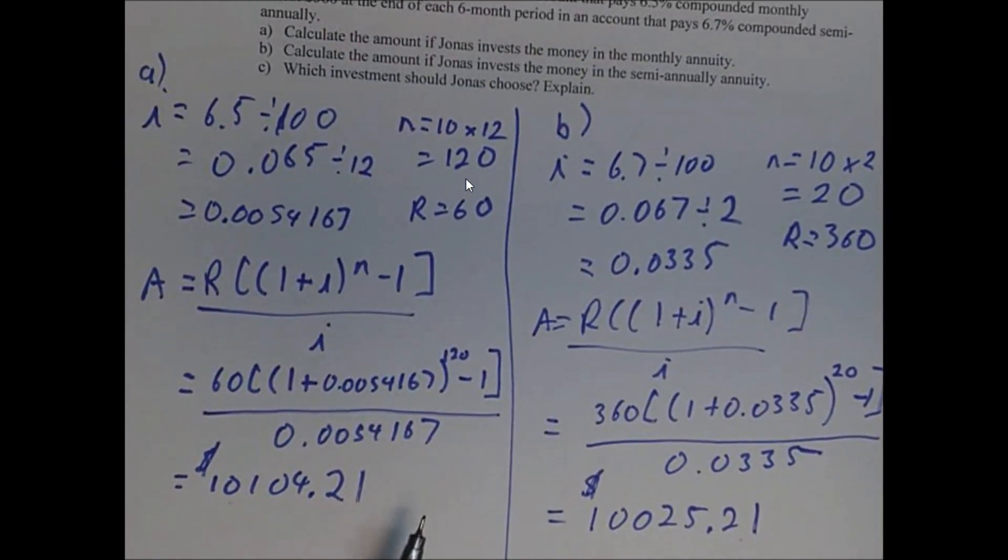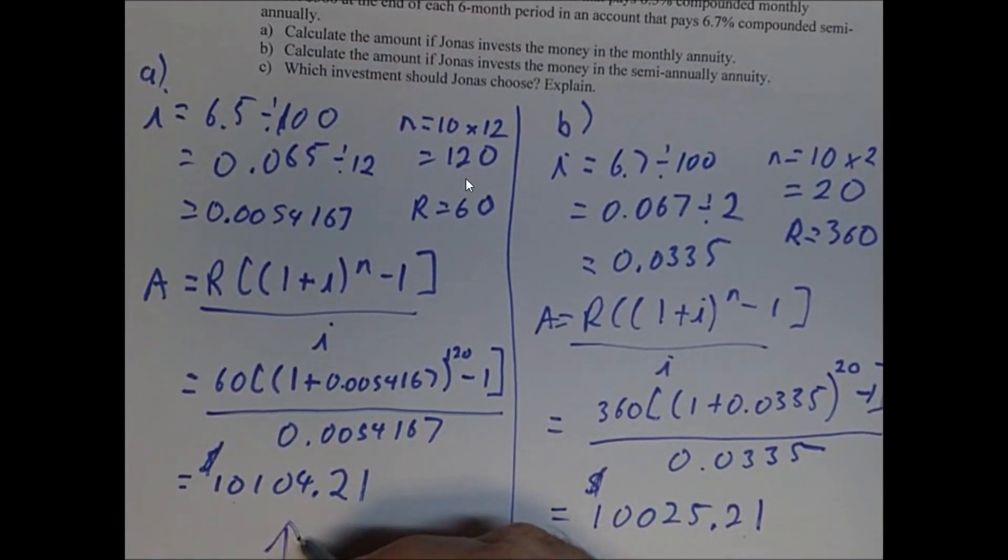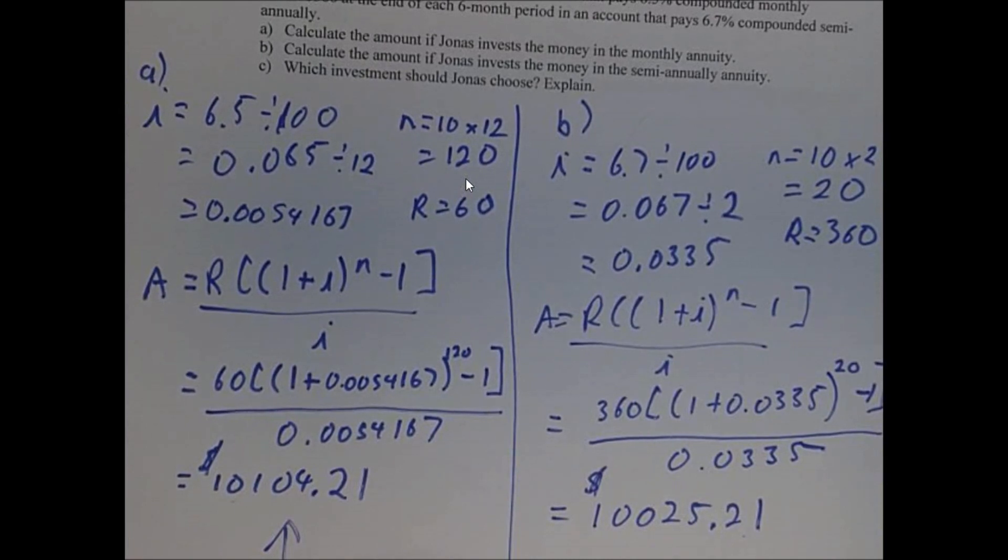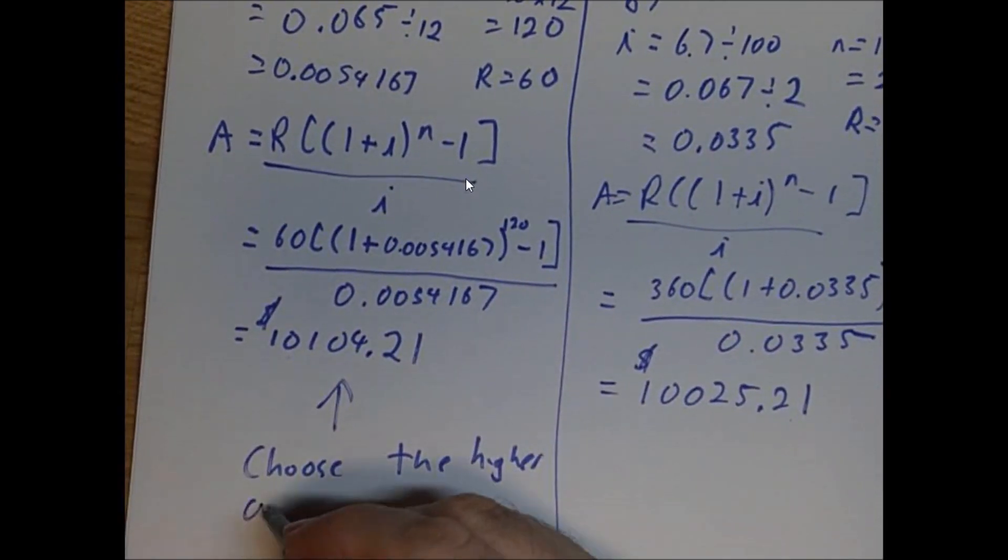So I would take the first investment, the $60, the monthly. So I would choose this one. So choose the higher one, or the higher amount.